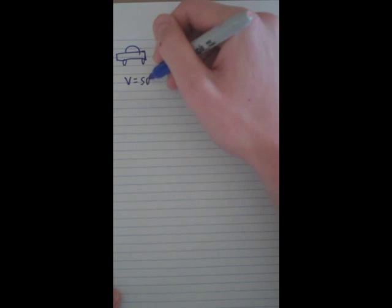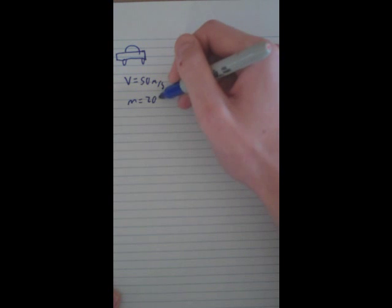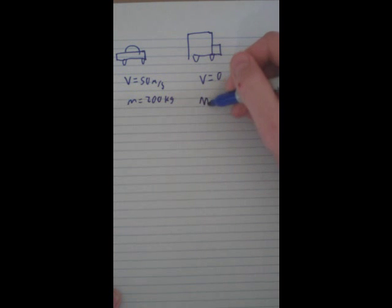Now that we've done an impulse problem, let's talk about collisions. So say we have a car. And this car has a velocity of 50 meters per second and a mass of 200 kg. And then we have a truck. And this truck has zero velocity but it has a large mass of 1,000 kg.